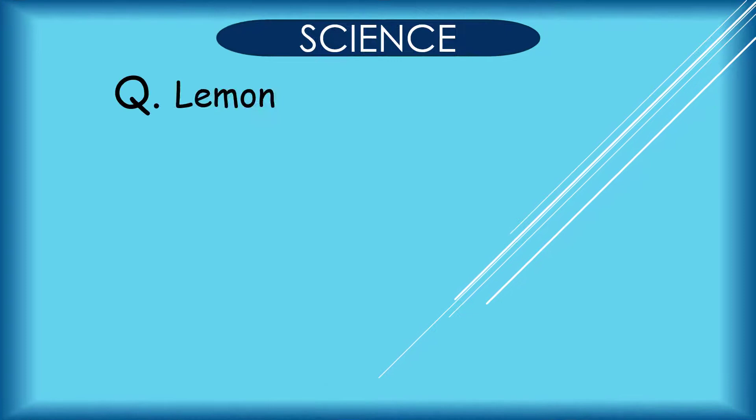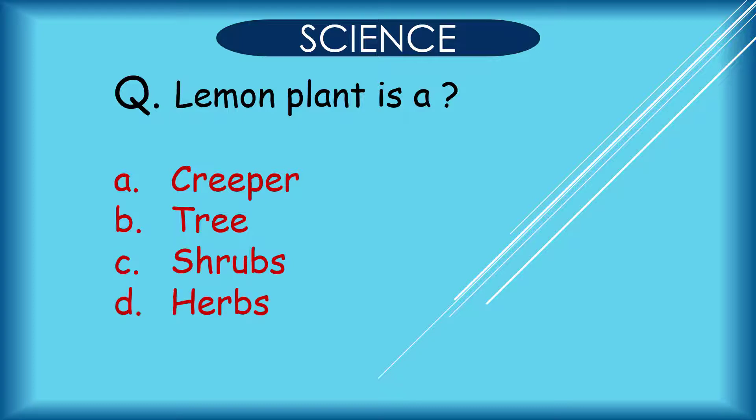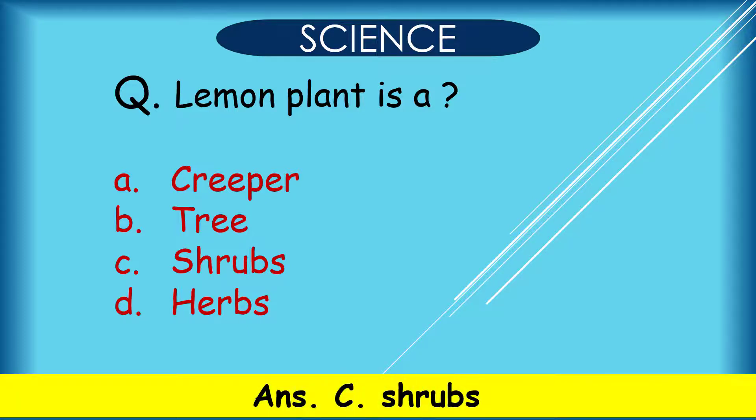Question: Lemon plant is A. Creeper, B. Tree, C. Shrubs, D. Herbs. Correct answer is C. Shrubs.